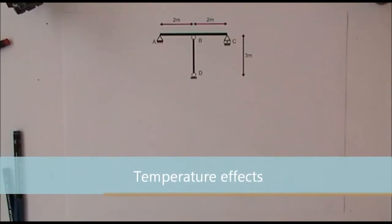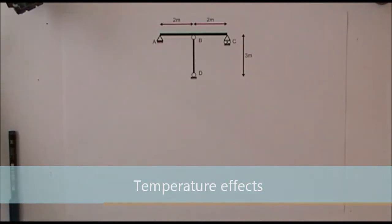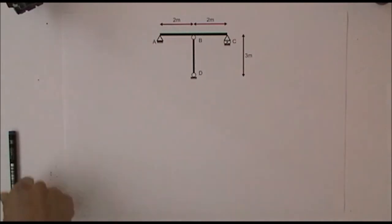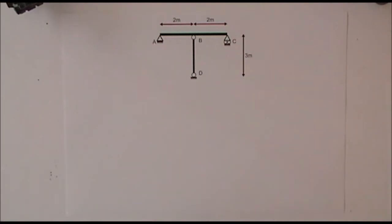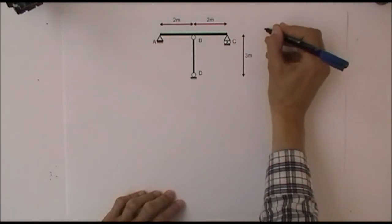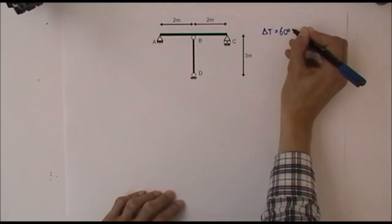In this example we're looking at temperature effects on a simple frame. In the picture we have a frame which spans from A to B to C to D. ABC is a beam of 4 metres and BD is a column of 3 metres. The question is: what is the axial force in the column BD when we have a temperature change of 60 degrees centigrade?